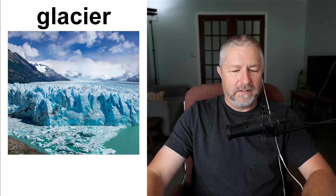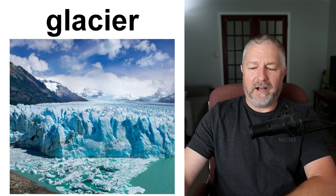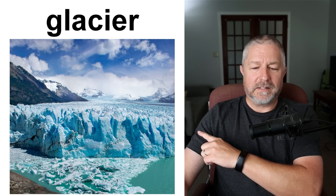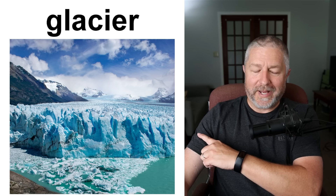A glacier. Let me check my pronunciation — I'm using the North American pronunciation: glacier. Basically, a glacier is like a large river but instead of water it's ice and snow. It obviously moves a lot more slowly than a river. In Britain you might say glacier. To see a glacier you need to go really far north or really far south — to places like Norway, Greenland, Iceland, or northern Canada. A glacier: a slow-moving river of ice and snow.